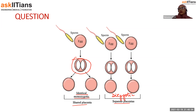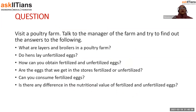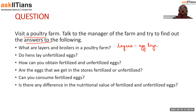In a poultry farm, layers are the birds grown especially for eggs, and broilers are the birds grown only for their meat. Layers can lay good quality eggs, and broilers can provide good quality meat.